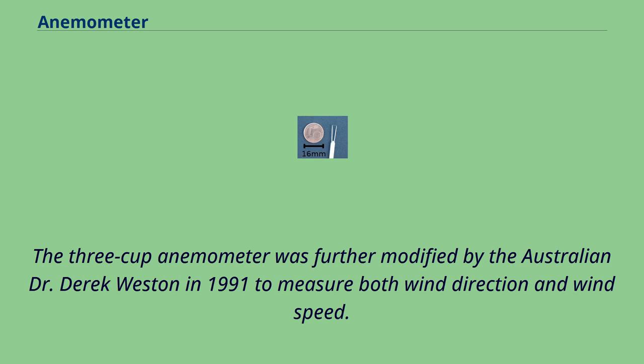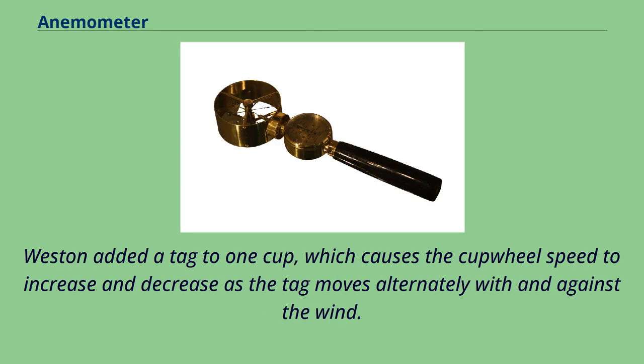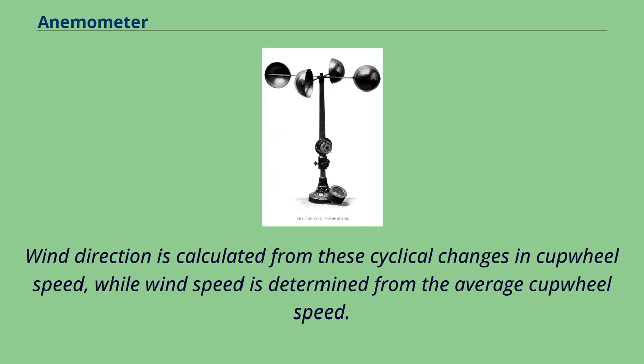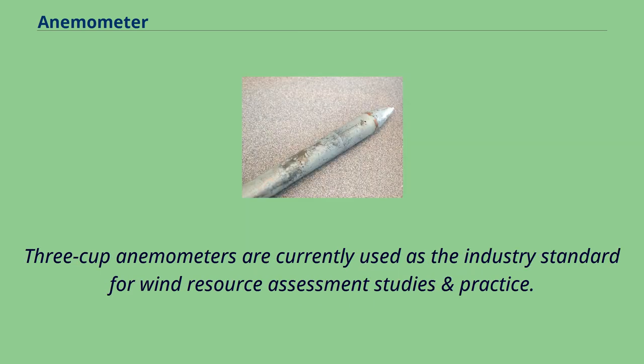The three-cup anemometer was further modified by Australian Dr. Derek Weston in 1991 to measure both wind direction and wind speed. Weston added a tag to one cup, which causes the cup wheel speed to increase and decrease as the tag moves alternately with and against the wind. Wind direction is calculated from these cyclical changes in cup wheel speed, while wind speed is determined from the average cup wheel speed. Three-cup anemometers are currently used as the industry standard for wind resource assessment studies and practice.